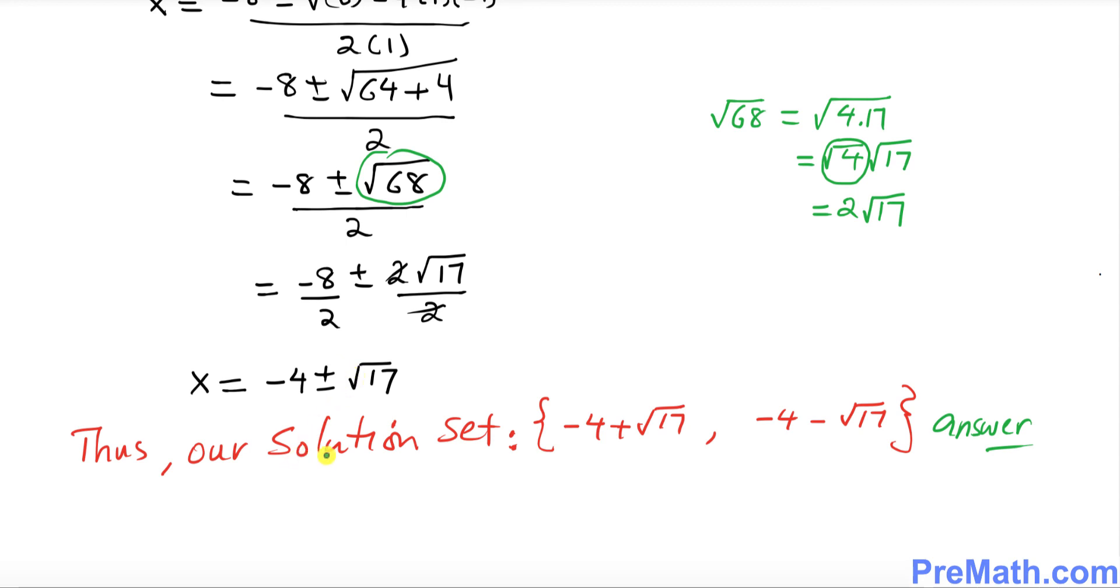Thus our solution set turns out to be -4 + √17 and -4 - √17 by splitting these two positive and negative signs. Thanks for watching and please subscribe to my channel for more exciting videos.